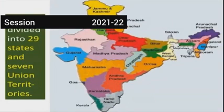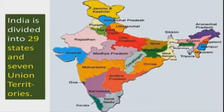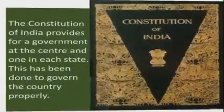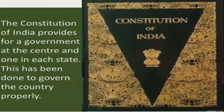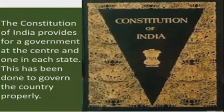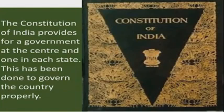India is divided into 29 states and 7 union territories. The constitution of India provides for a government at the center and one in each state. This has been done to govern the country properly.